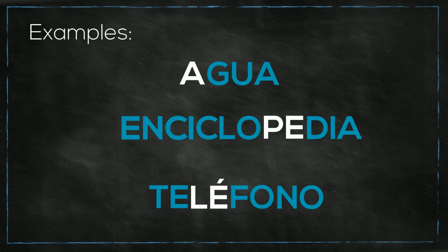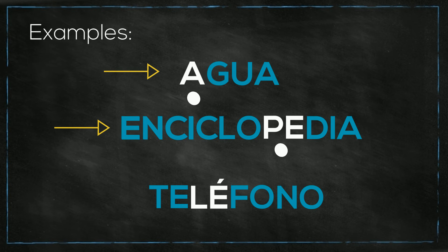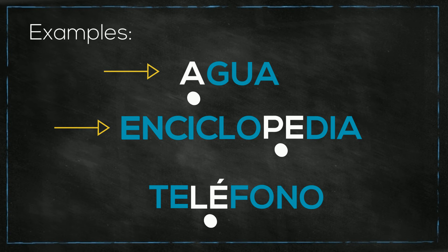Great. Now notice that these words have the sílaba tónica, or the stress syllable, on the penultimate or second to last syllable. The last word, teléfono, has the stress syllable on the third to last syllable — the antepenultimate syllable. The accent mark on this syllable acts as a signal to let us know where the syllable stress is located in the word so that we can pronounce it correctly.